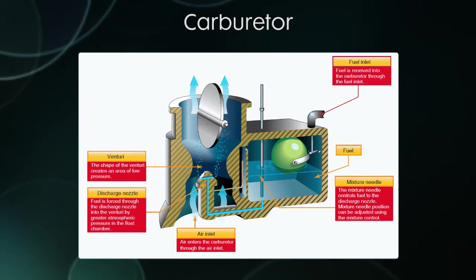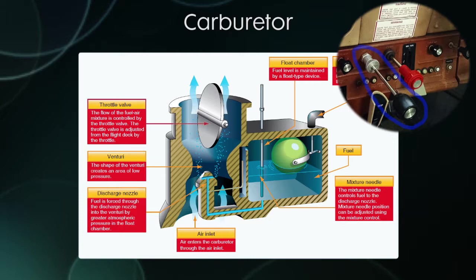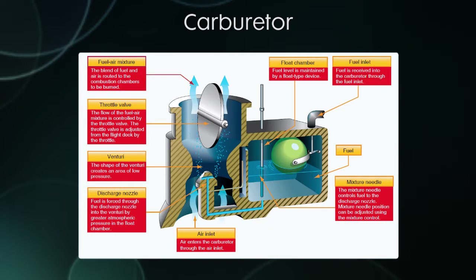The fuel inlet is where fuel comes into the chamber from the wing tanks. It works on the same principle as your toilet: there's a float, and when the level gets low, the float goes down, opens the fuel inlet, and more fuel comes in from the wing tanks. We also have the throttle valve, controlled by your throttle. The more open the throttle, the more air enters the carburetor, the more fuel mixes with it, and you get more power to the engine. Overall, it's a fairly simple system: a venturi sucks the fuel in, vaporizes it, mixes it with air, and that mixture is sent to the cylinders.